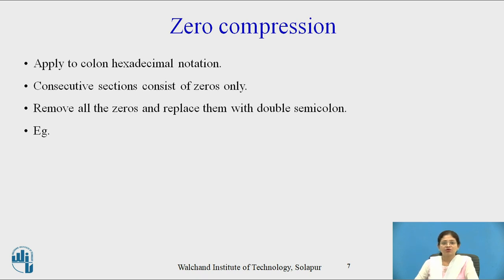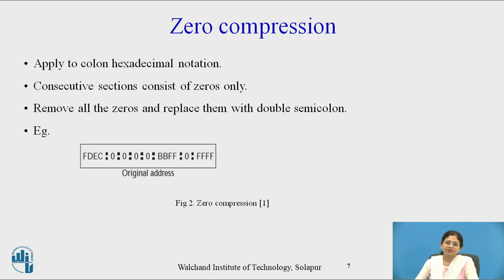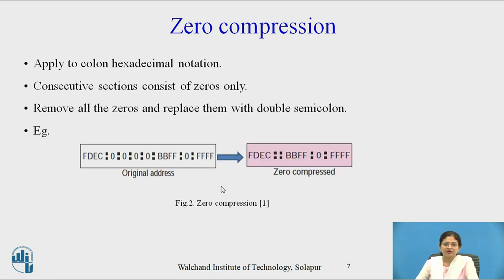The next important topic is zero compression, which is applied to the colon hexadecimal notation. If there are consecutive sections consisting of zeros only, then the zeros are removed and replaced by a double colon. For example, the address FDEC colon 0000 colon 0000 colon 0000 colon 0000 colon BBFF colon 0 colon FFFF is compressed to FDEC double colon BBFF colon 0 colon FFFF. This is known as zero compression, provided by IPv6 only.